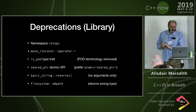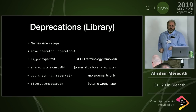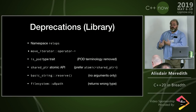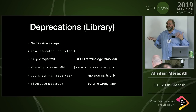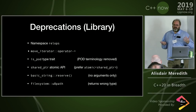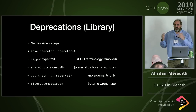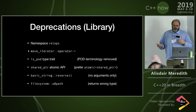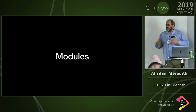Other things deprecated in the standard library: relops, move_iterator dereferenced through arrow, the is_pod trait, the free-function atomic API for shared_ptr (being replaced by something better), basic_string::reserve() with no arguments (which was interpreted as shrink_to_fit but was never clearly what anyone wanted), and some filesystem functions including u8path — as we review our whole approach to Unicode and UTF-8.